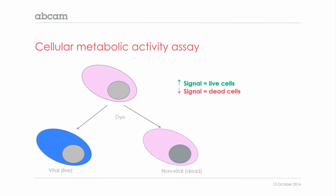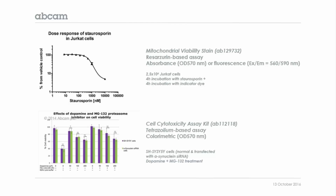Here are a couple of examples. In the upper panel, you can see Jurkat cells treated with increasing concentrations of staurosporine during four hours. Staurosporine is a protein kinase inhibitor known for inducing cell death and commonly used as a positive control. The viability of the cells was measured with our mitochondrial viability stain, where the indicator dye is modified by mitochondrial enzymes. The oxidation product can be measured by absorbance, producing a pink color, or by fluorescence. In the lower panel, our colorimetric cell cytotoxicity assay was used to assess the viability of the neuroblastoma cell line SH-SY5Y, with data suggesting that dopamine reduces cell survival independently of alpha-synuclein presence.